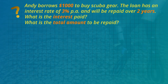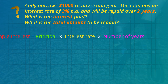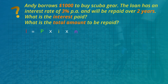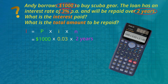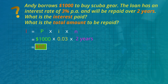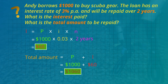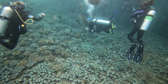Andy borrows one thousand dollars to buy scuba gear. The loan has an interest rate of three percent per annum and will be repaid over two years. What is the interest and what is the total amount to be repaid? Let's use the PIN rule — remember to write the percentage as a decimal. So one thousand multiplied by 0.03 multiplied by 2 is the interest of sixty dollars. Andy must also repay the thousand dollars he borrowed, so the total amount to be repaid is one thousand and sixty dollars.